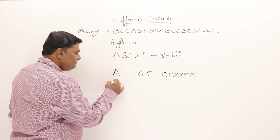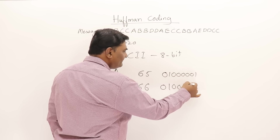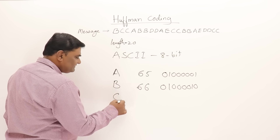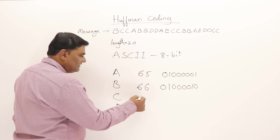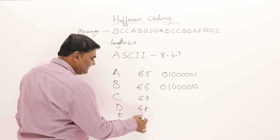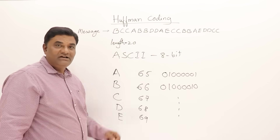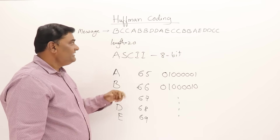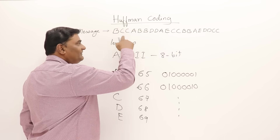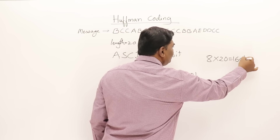Similarly, B is 66, and C, D, E have codes 67, 68, and 69 respectively, each with an 8-bit binary code. So 8 bits are there for each alphabet. If this message is sent normally with 8 bits per alphabet, the total number of bits will be 8 multiplied by 20 — that is 160 bits.